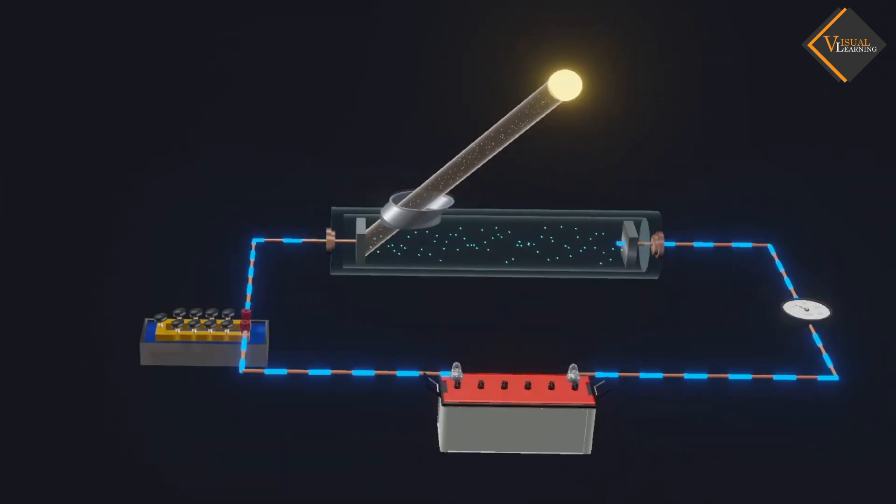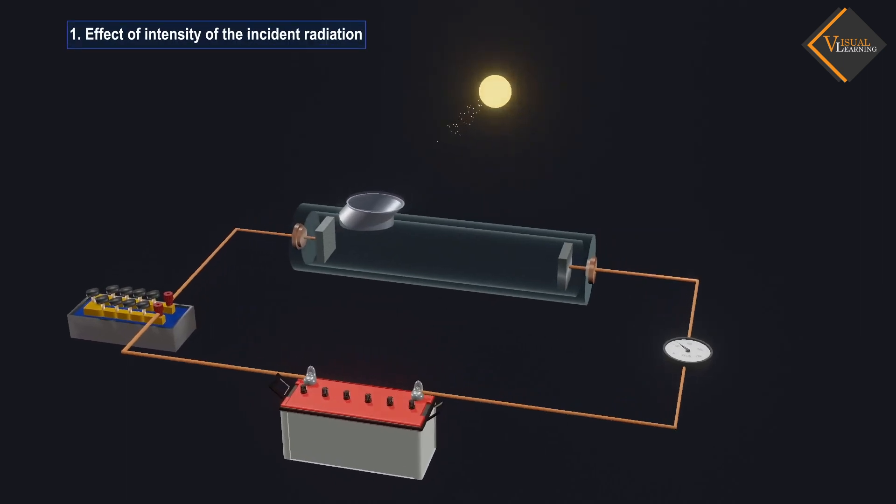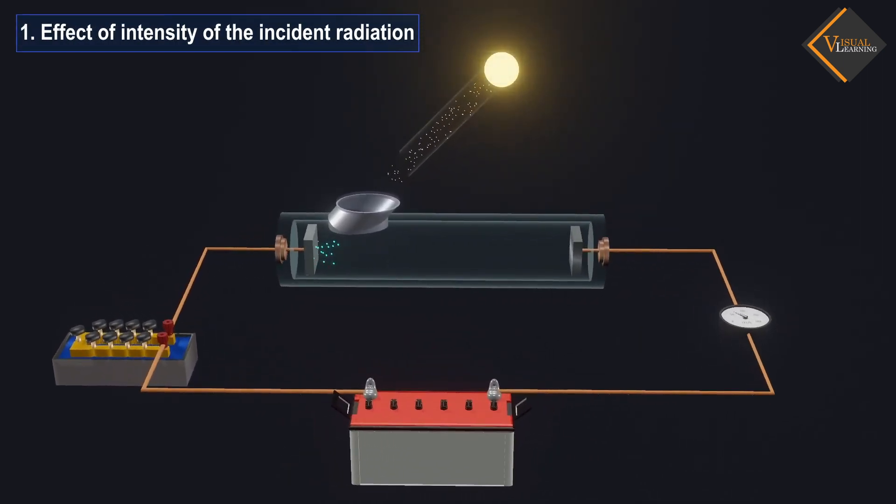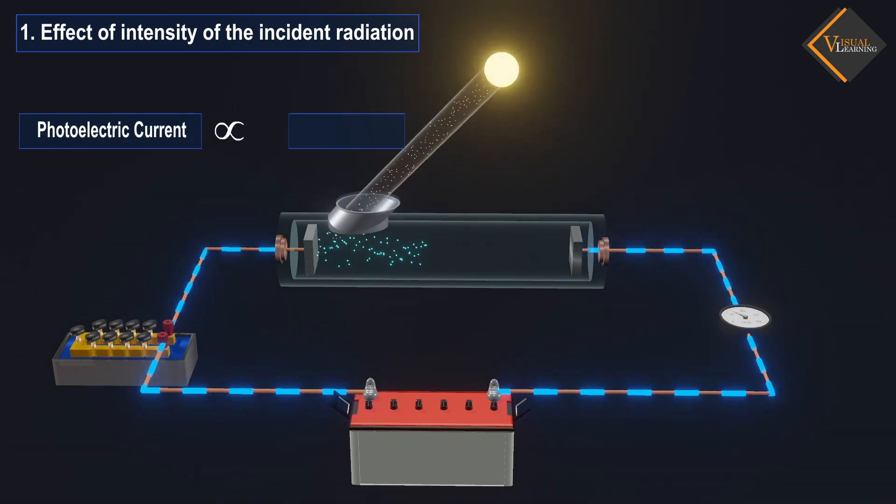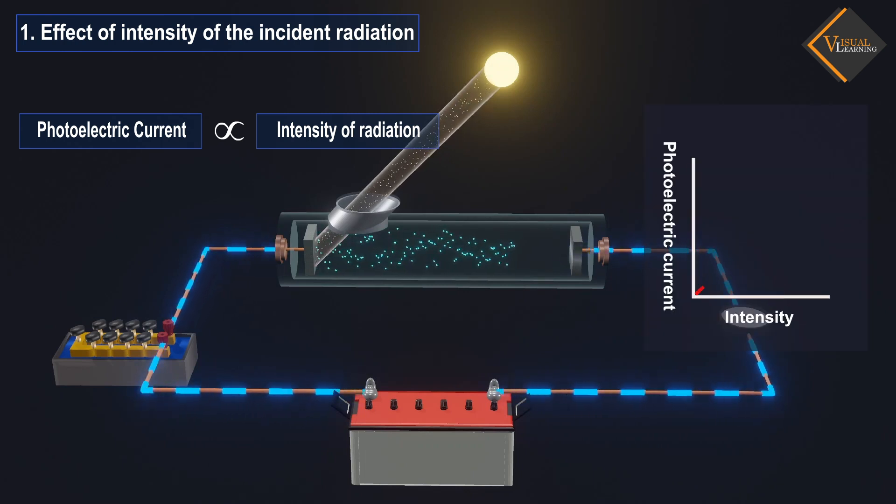Let's now understand how these factors affect the photoelectric effect. Effect of intensity of the incident radiation: It was found in this experiment that the photoelectric current is directly proportional to the intensity of radiation. This means that the higher the intensity of radiation, the higher the generated photoelectric current.